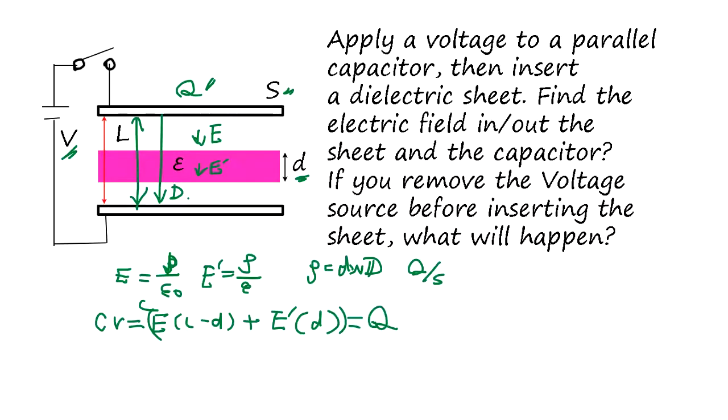So, we find a voltage, and voltage is, the Q over Epsilon S, this guy, times L minus D, plus Q over Epsilon S, D, okay?